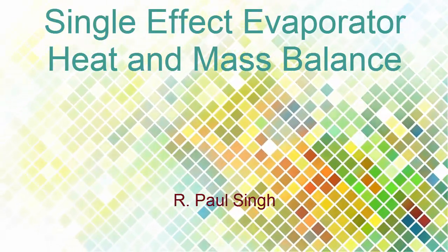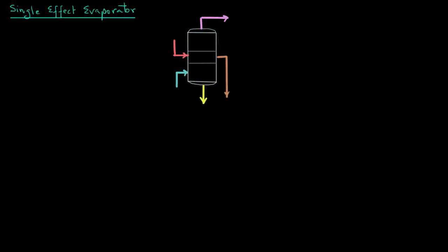In this tutorial, we will look at a heat and mass balance for a single effect evaporator. Let's look at the schematic. We have the various streams going into the evaporator: the vapors leaving on the top, steam coming in on the side, the feed entering at the bottom, and the condensate leaving the system along with the concentrated product. Note that the tubes and the heating chest of this evaporator is called the calendria.